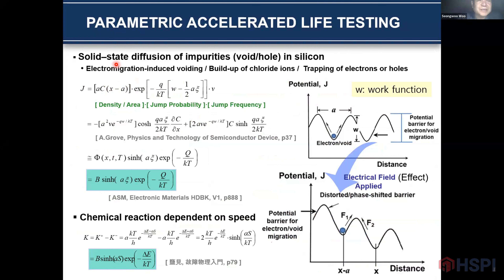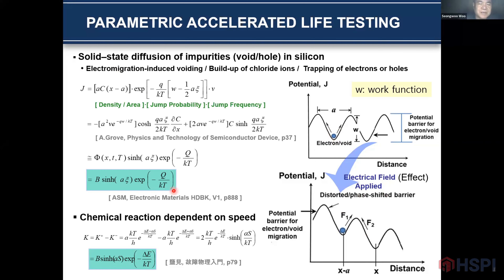I will give you one example for transport phenomena in material. This is solid diffusion of an impurity in silicon. It involves electromigration-induced voiding and build-up of chlorine in trapped electric fields and voids. When a mechanical field is fully applied, the electric void migrates to the right-hand side. Finally, a junction function will be expressed as a sinh function and exponential of some temperature.